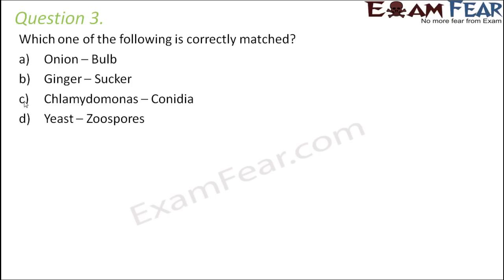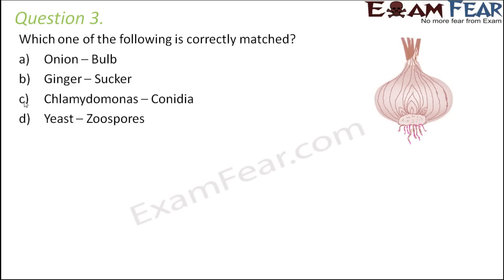Question number 3: Which one of the following is correctly matched? Onion–bulb, ginger–sucker, Chlamydomonas–conidia, yeast–zoospores. Bulb and sucker are modifications of different parts of plants — like modification of stem or root. Let's see which one is correctly matched.